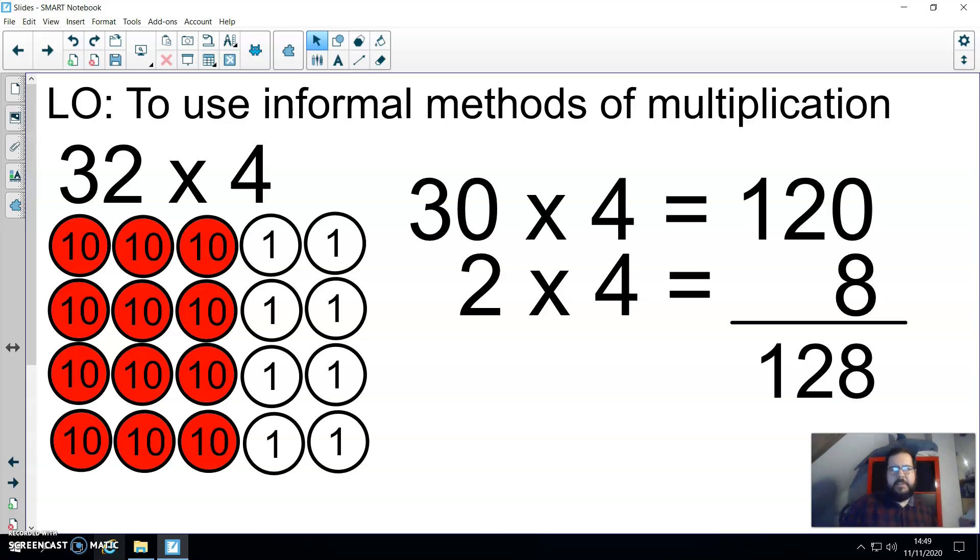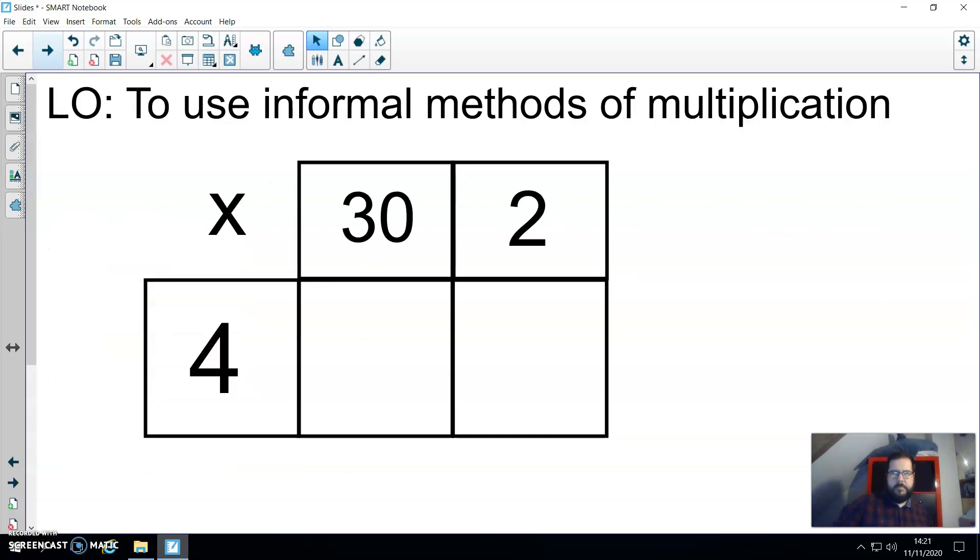I want to move on today to using the informal methods from this mental methods. So we're going to use a method today called the grid method. As you can see here, we're still doing the calculation 32 multiplied by 4. I have partitioned 32 into 30 and 2 and I have laid them out on a grid. So you can see they're both at the top and the 4, the multiplier, is at the side.